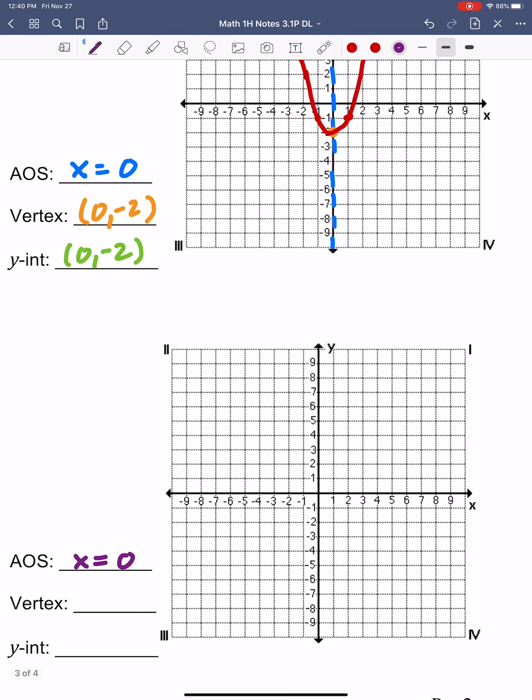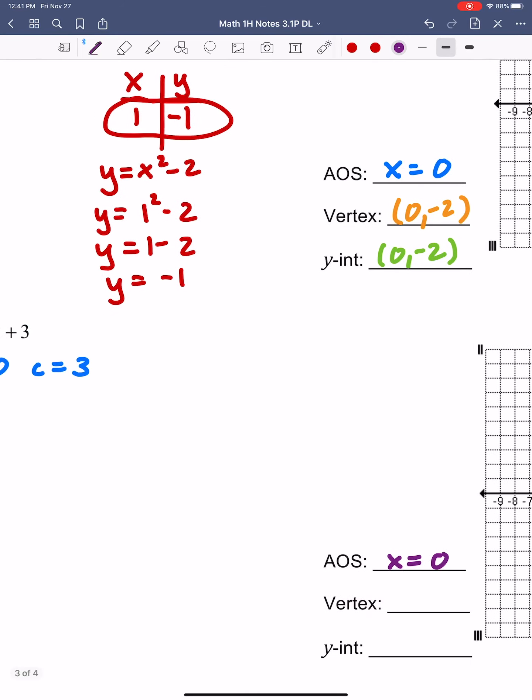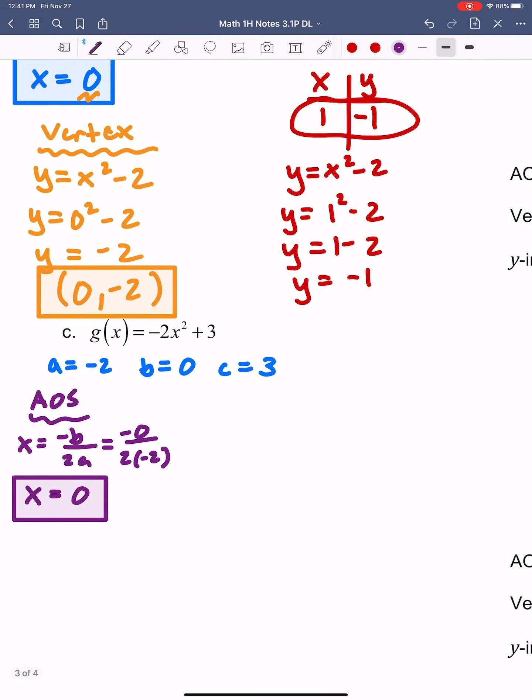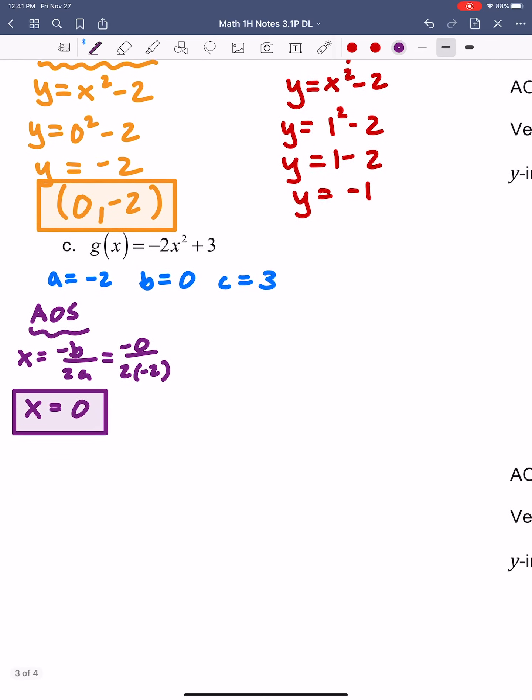So my axis of symmetry is 0. Once again, this dotted line goes right down the middle here through 0 on my x-axis. That's the axis of symmetry. Now we can go ahead and find the vertex.